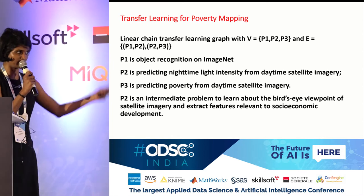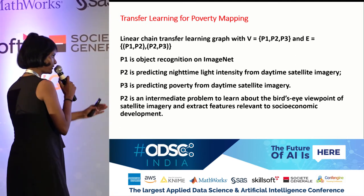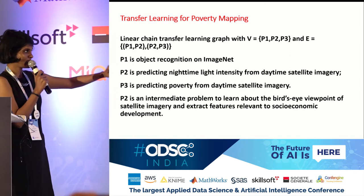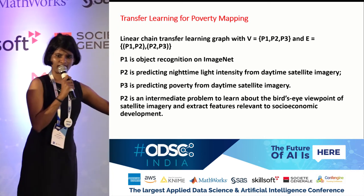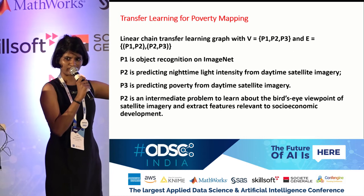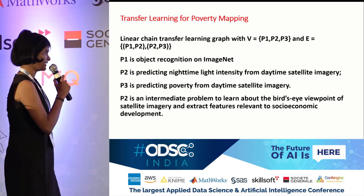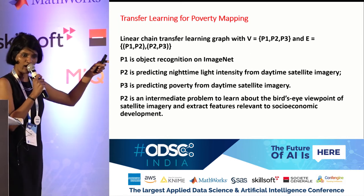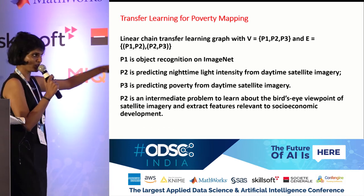I'll quickly walk through the process. We break the problem down into three parts. Problem one: I take my VGG16 model and pre-train it on ImageNet for object recognition. Problem two: from daytime satellite imageries, I'm trying to predict nighttime light intensity. Problem three: predicting poverty from the daytime satellite imagery. The second problem is actually an intermediary to achieve my goal.